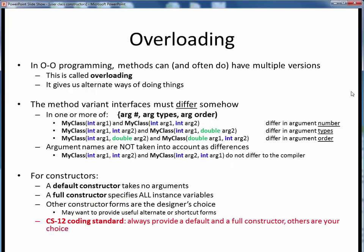It's very common and very useful in object-oriented programming to have multiple versions of a method with the same name, a concept called overloading. Overloading simply gives us different ways of doing things. For example, if we're creating an object, we can either do it the quick and easy way by using a default constructor, or we can be very specific about the values we want by using a full constructor. And as we'll see later on, we can even have additional constructor forms than just those.